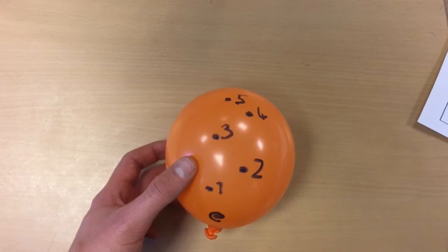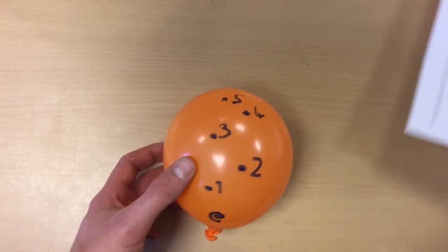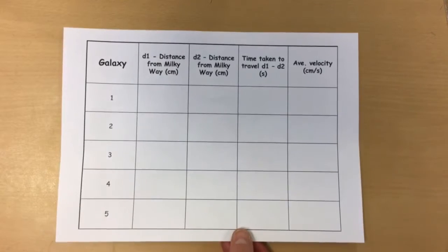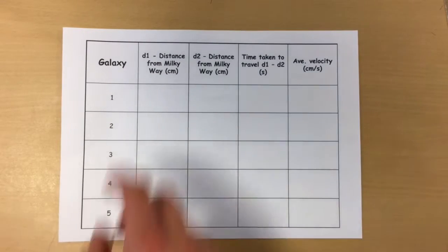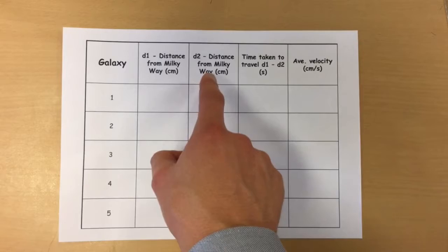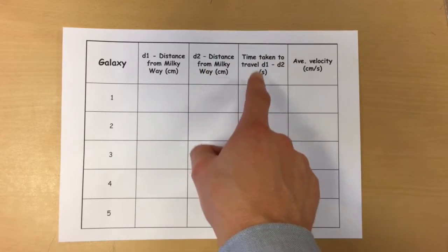Now how are we going to record this? Well I'm going to get a piece of paper that has all the information we're going to be using today. Now we can see here we've got four different headings. We're going to look at the first two and then we're going to look at this one later.